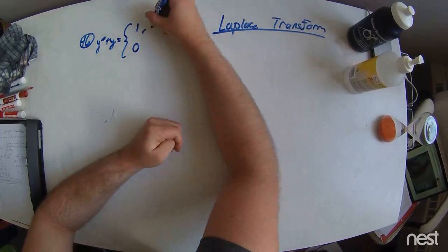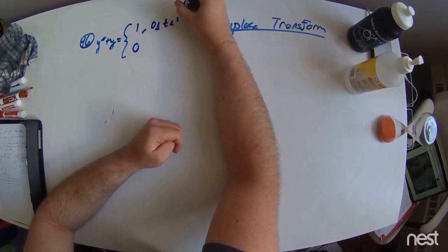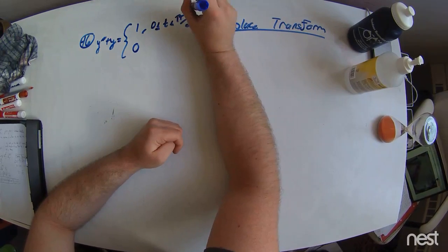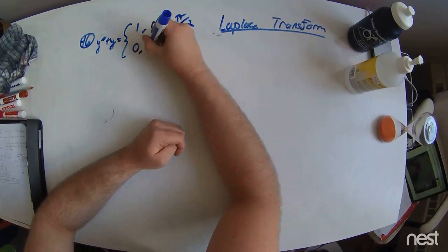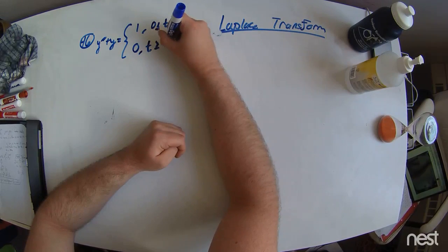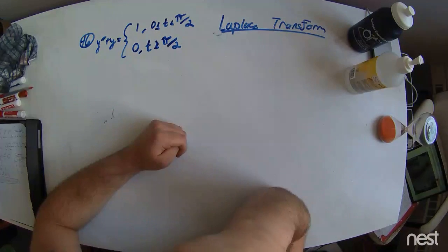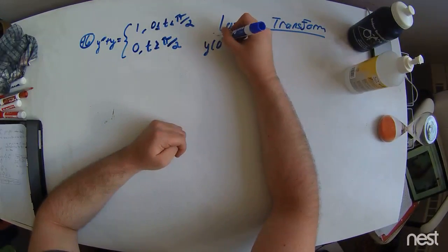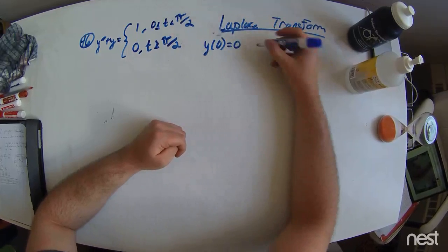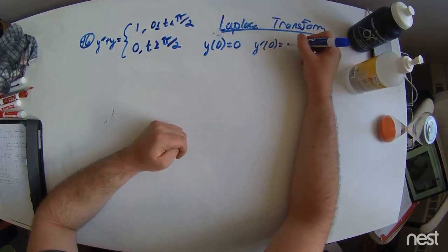This problem equals 1 from 0 is less than or equal to t is less than pi over 2. In addition, our condition is from y equals 0 and y prime equals minus 1.